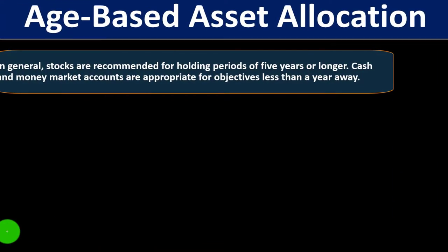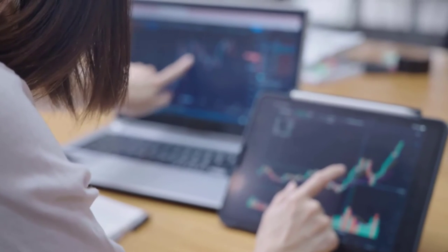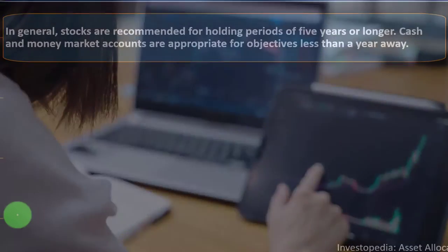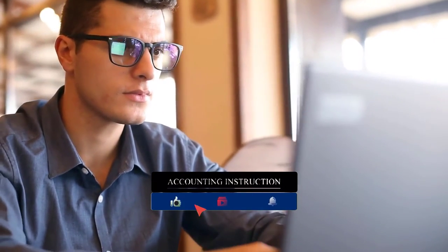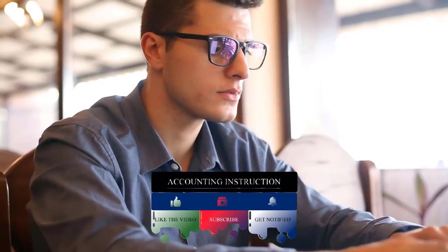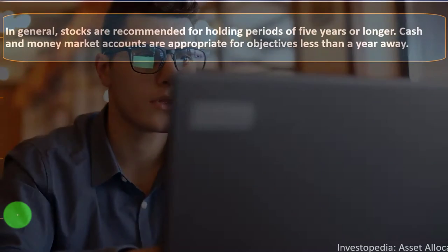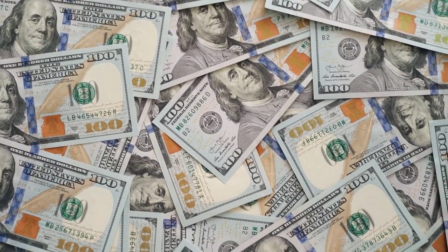In age-based asset allocation, stocks are generally recommended for holding periods of five years or longer. Cash and money market accounts are appropriate for objectives less than a year away. If you have a very short-term goal, you wouldn't want all your money in stocks, because a market dip could be a problem. For short-term goals, a money market or savings account may be more appropriate.